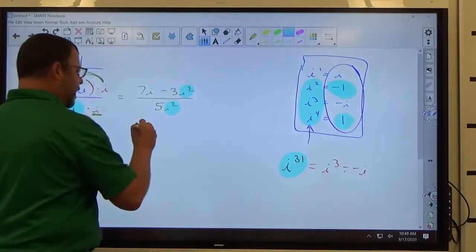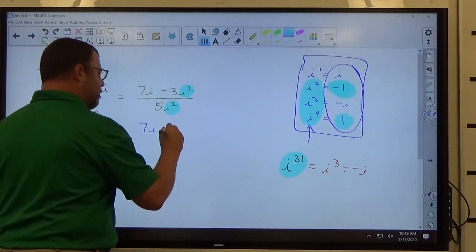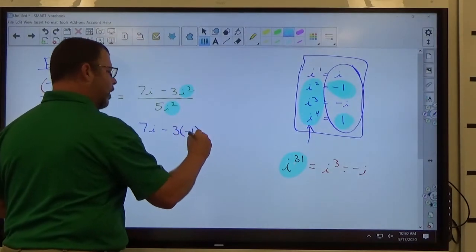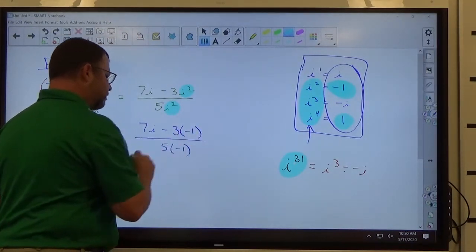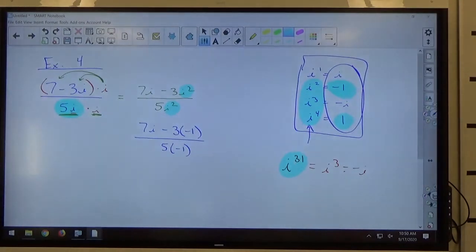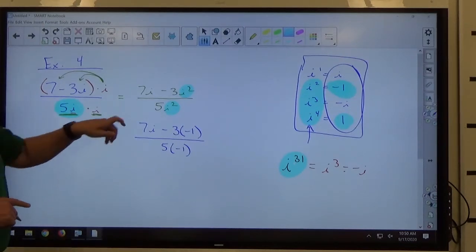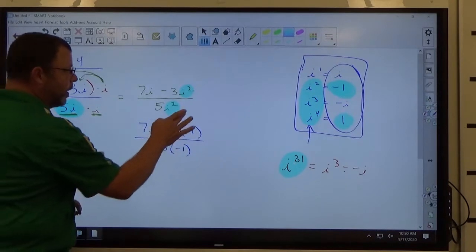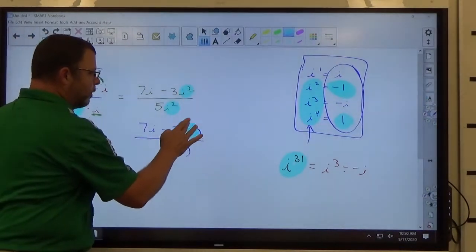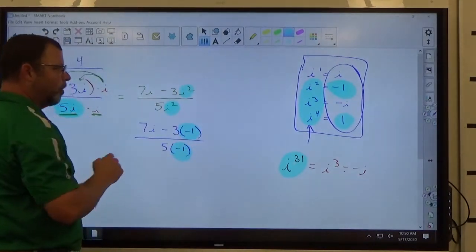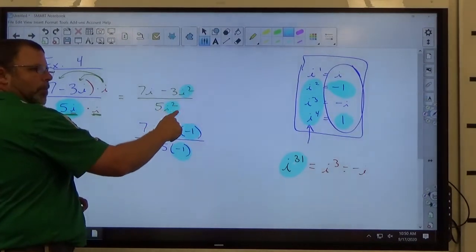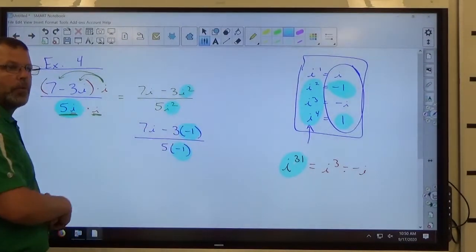So if I do that, I've got 7i minus 3 times negative 1 over 5 times negative 1. All I did there was a substitution. You can see here, i squared, I replaced with negative 1. i squared down here, replaced with negative 1. This 3 is being multiplied by i squared. This 5 is being multiplied by i squared. So the substitutions get multiplied.